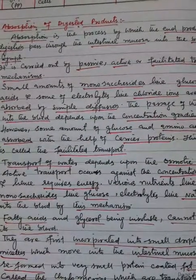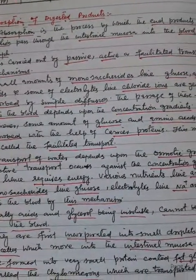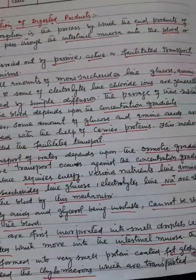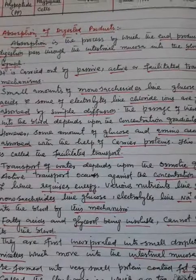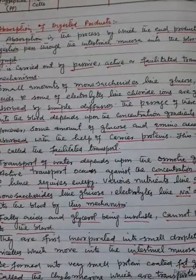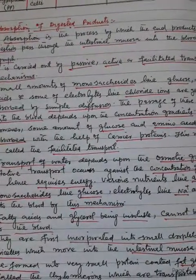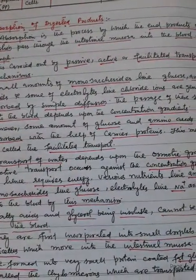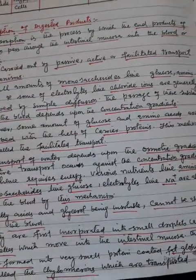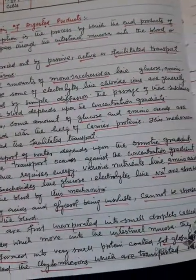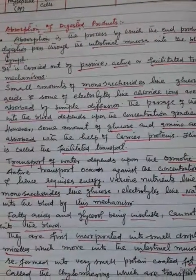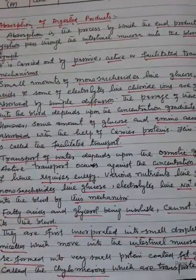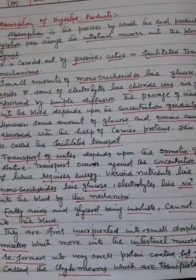Some amount of glucose and amino acids are absorbed with the help of carrier proteins. This mechanism is called facilitated transport.